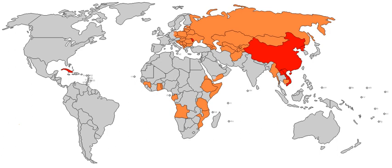The study of economic systems also examines how information flows between them and the social relations within the system. The analysis of economic systems traditionally focused on the dichotomies and comparisons between market economies and planned economies and on the distinctions between capitalism and socialism. Subsequently, the categorization expanded to include other topics and models. Today the dominant form of economic organization at the world level is based on market-oriented mixed economies.